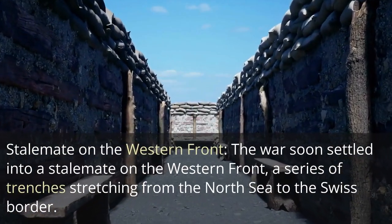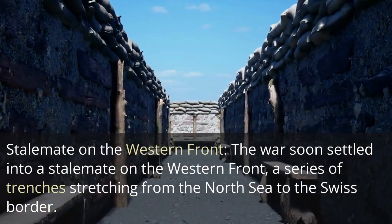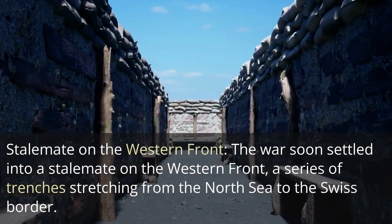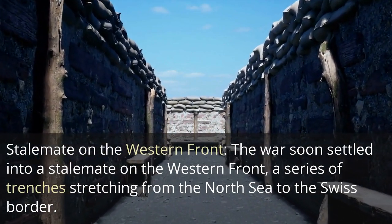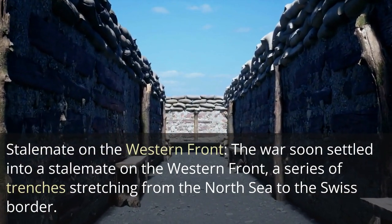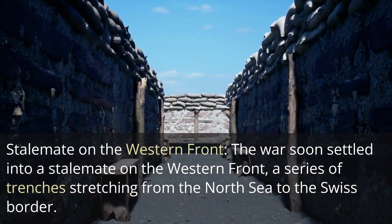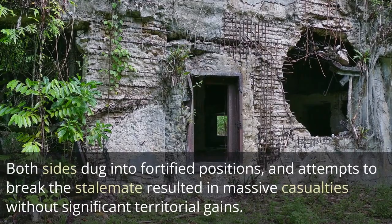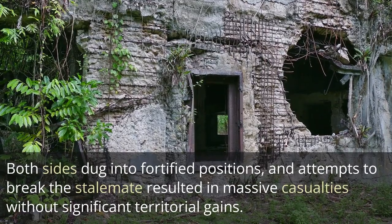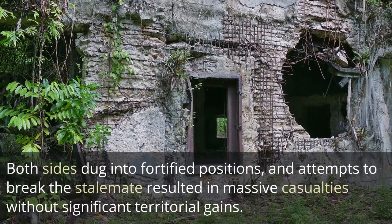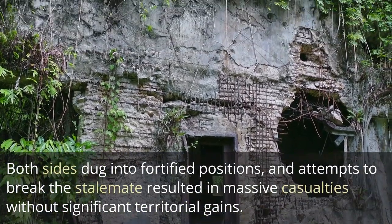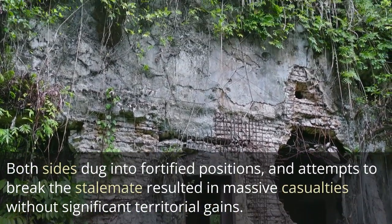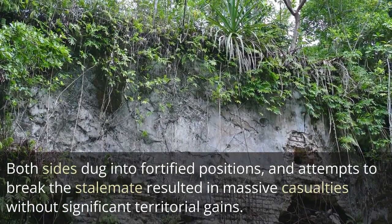Stalemate on the Western Front. The war soon settled into a stalemate on the Western Front, a series of trenches stretching from the North Sea to the Swiss border. Both sides dug into fortified positions, and attempts to break the stalemate resulted in massive casualties without significant territorial gains.